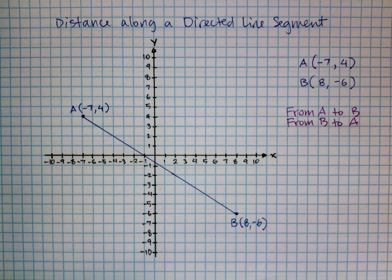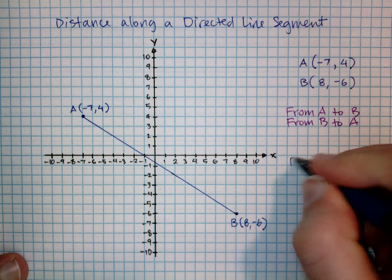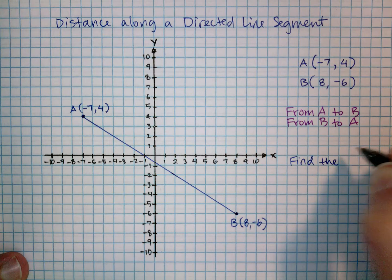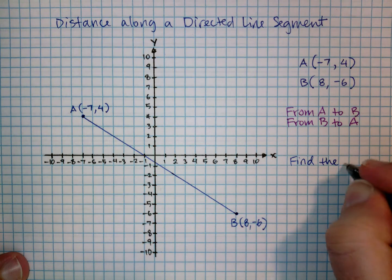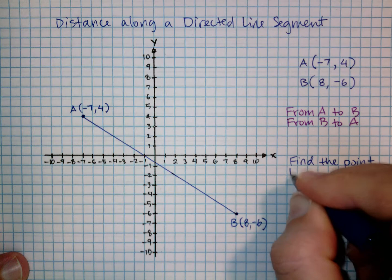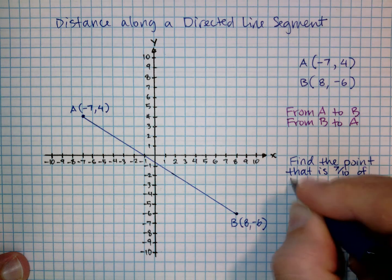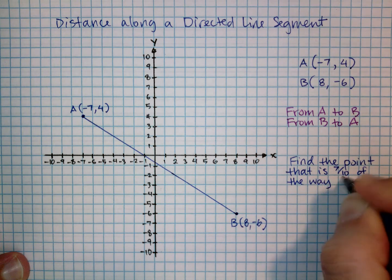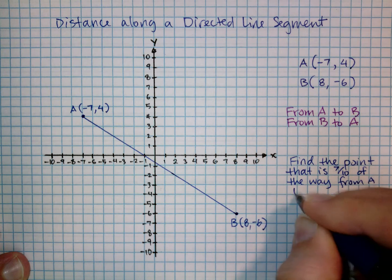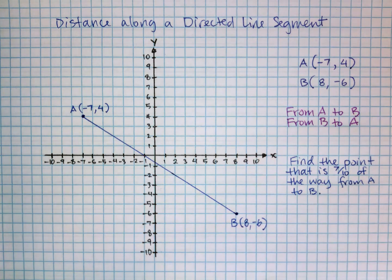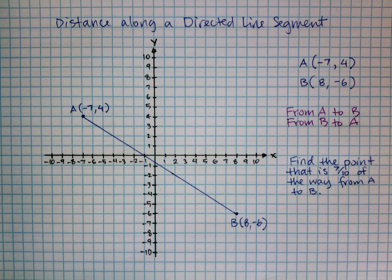The example I want to do: find the point that is seven tenths of the way from A to B. Now if you're looking for a point halfway, that's easy — that's midpoint. You just take the points, add them up, and divide by two. But seven tenths of the way is different — it's a process.